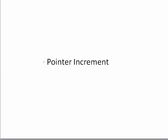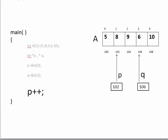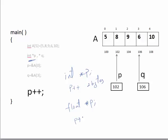The first arithmetic operation is pointer increment. If I write P++, it does not just add one to the pointer — P++ means move to the next element. Since the pointer stores the address of an integer, P++ moves to the next integer, incrementing by two bytes, not one. If it were a float pointer, P++ would increment by four bytes — so depending on the size of the data type, the pointer moves accordingly.